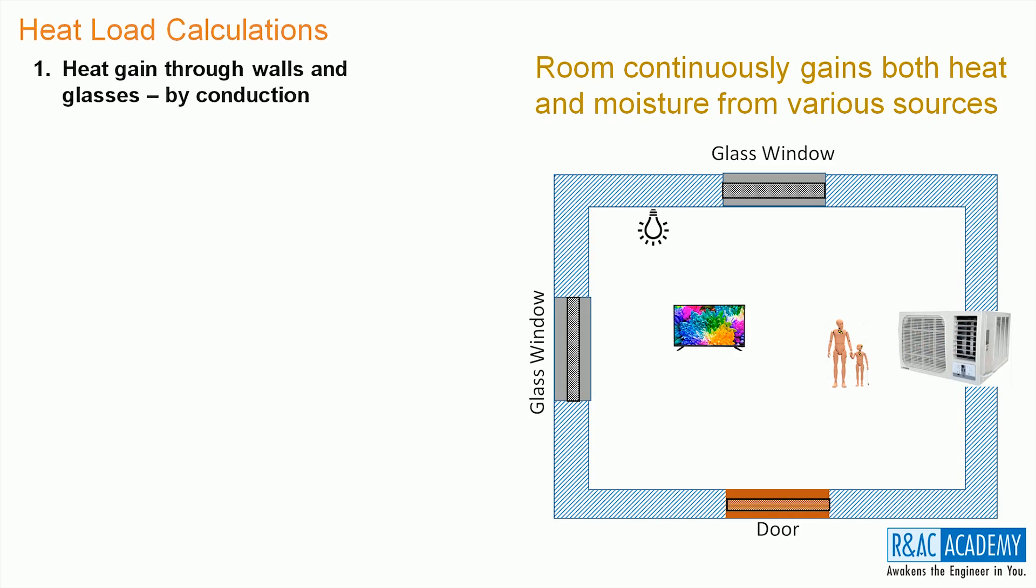The first source is heat gained through walls and glasses by conduction. This is the heat that flows from outside into the room through the walls and glasses due to temperature difference. This heat transfer happens by conduction. Only energy transfer happens here. Hence, the room gains only sensible heat.